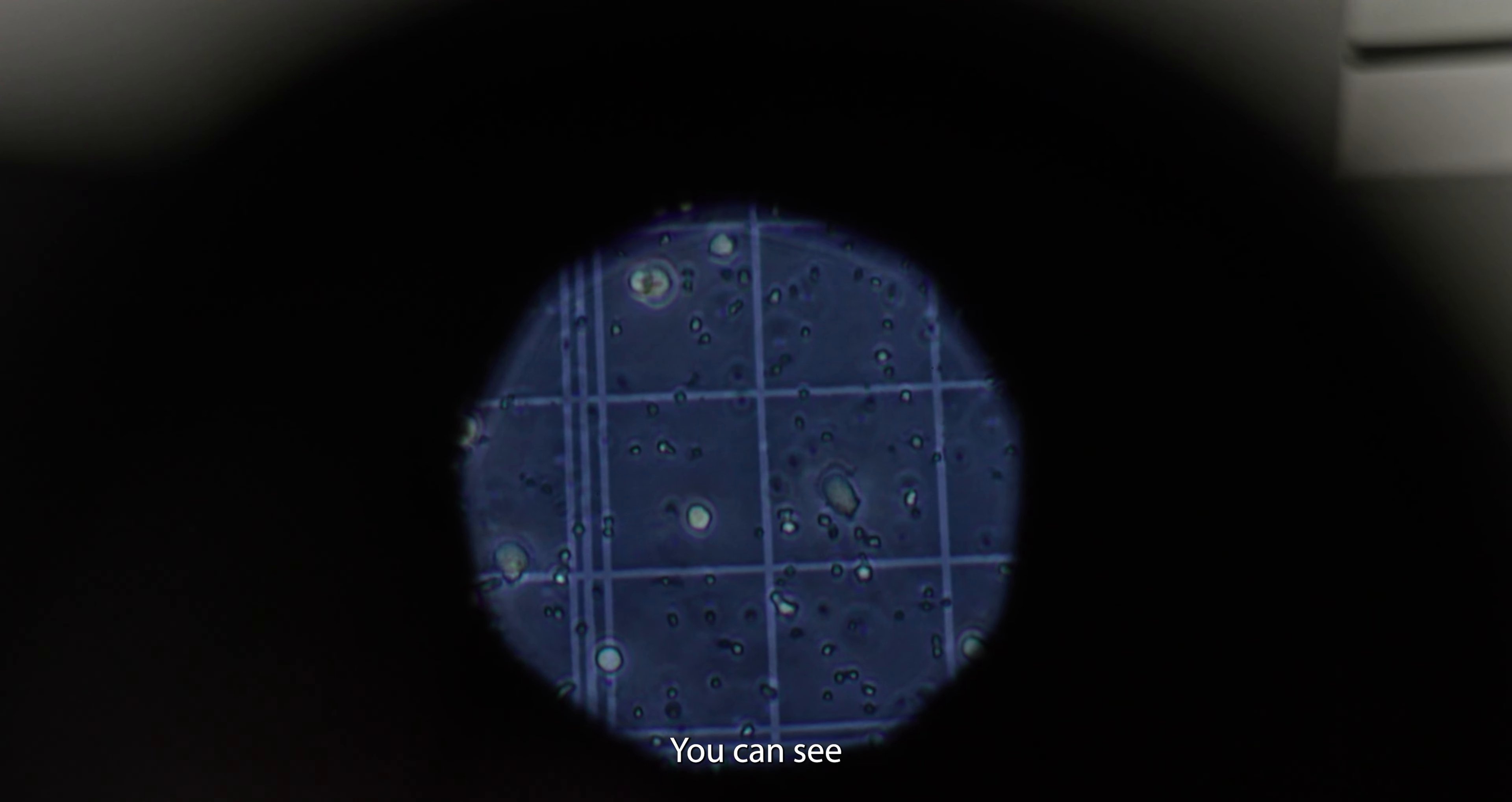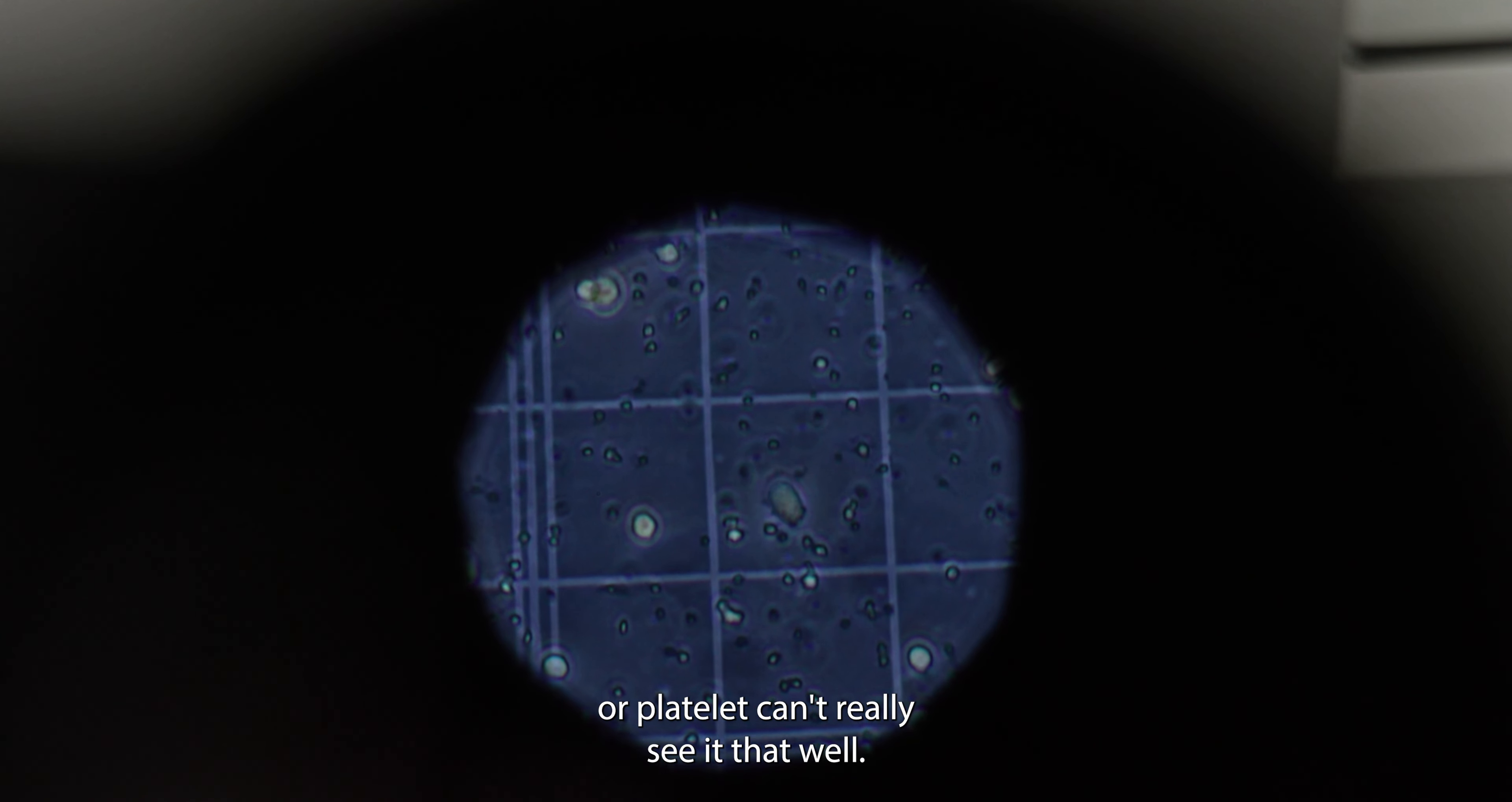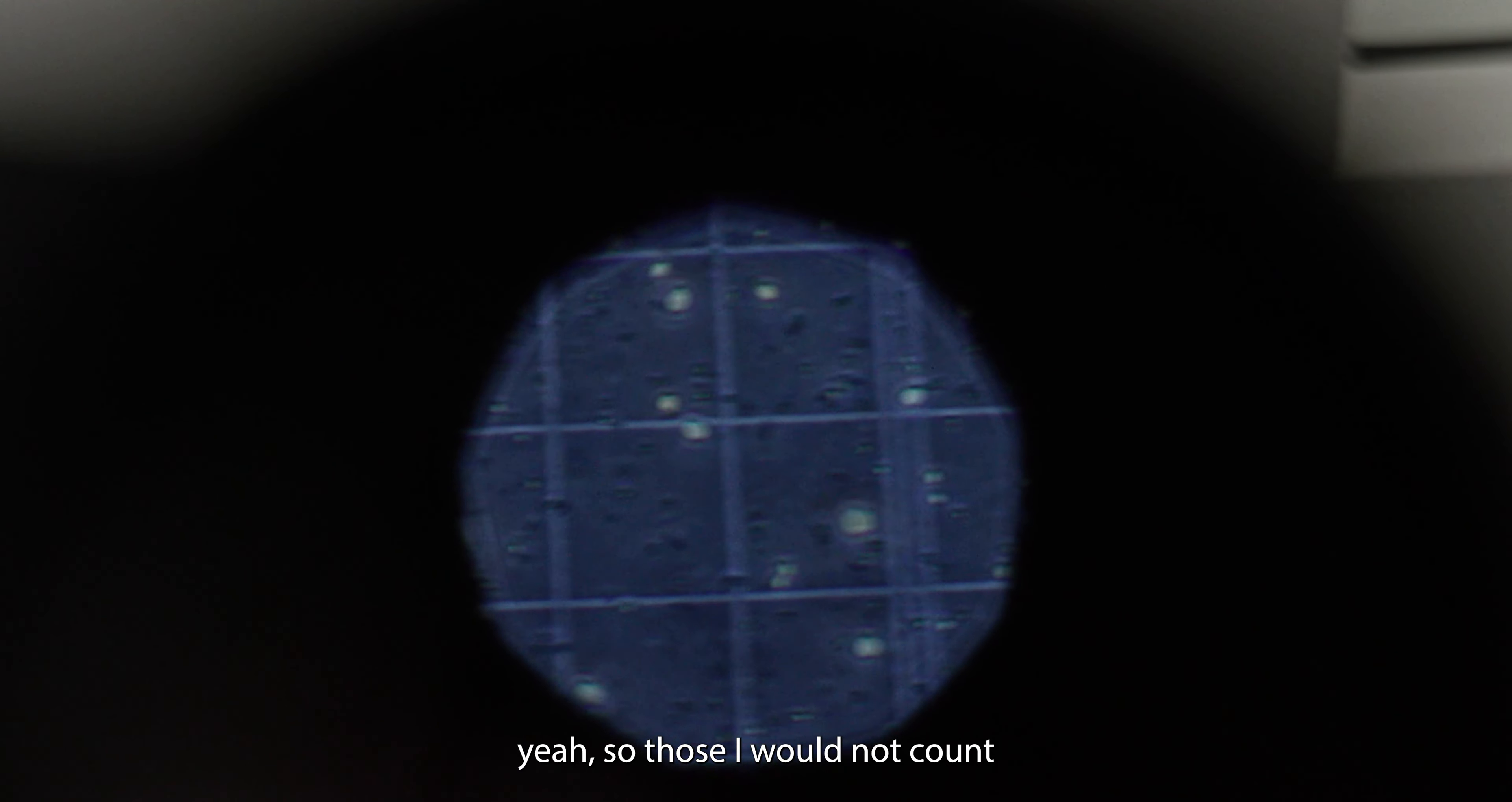You can see in the center, that one on the left, I would count. And that small smudge to the right, I would not. So one is either red blood cell or platelet. You can't really see it that well. And then the other one is probably just cell debris or fat. It's slightly dyed blue. It could be a very wonky dead cell. So those I would not count.